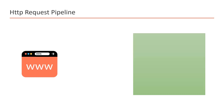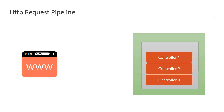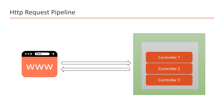Suppose here I have a browser and on the right side I have a server, on which I have deployed an ASP.NET Core web application with three controllers. When we send a request from the browser to the server, we generally assume the request directly goes to the controller, then to the action method, which decides the response. In reality, before hitting the controller, the request has to pass through a pipeline.